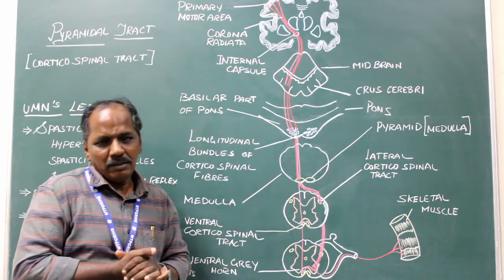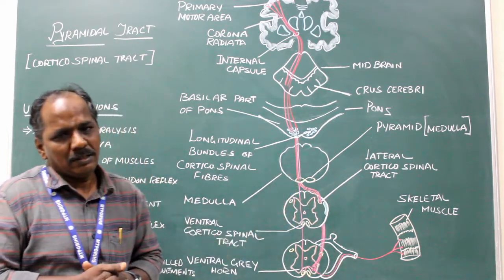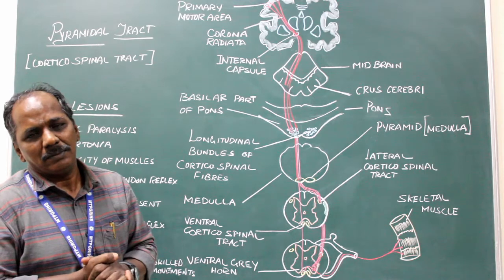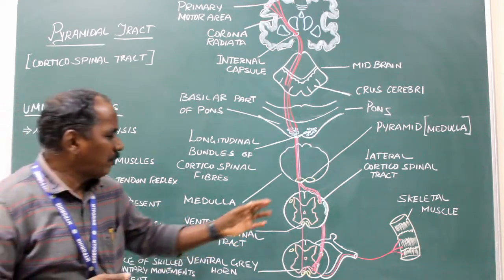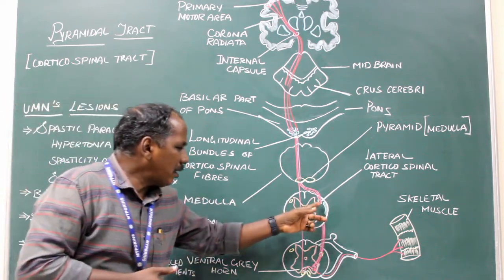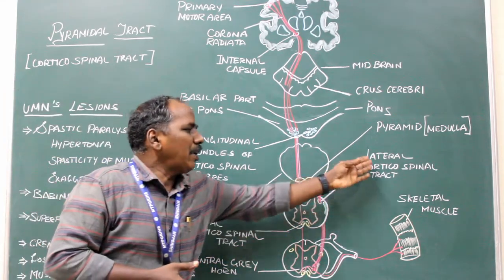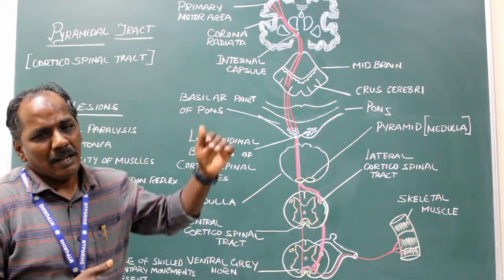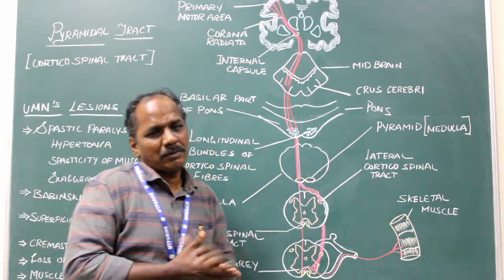In the lower part of the medulla, the majority of the fibers cross to the opposite side. This crossing over is known as pyramidal decussation. The fibers which have crossed descend and enter the lateral white column of the spinal cord, continuing as the lateral corticospinal tract.